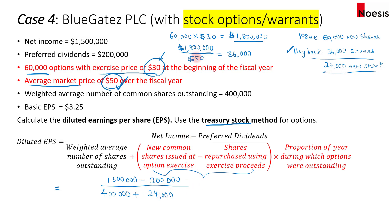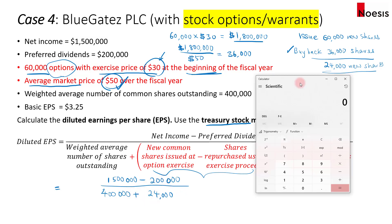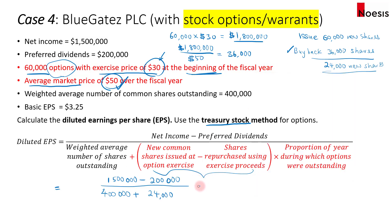Since the options were outstanding for the entire fiscal year, the proportion of year is 1, so we use the full 24,000. That gives us $1.3 million divided by 424,000 shares, which equals $3.07. Definitely, the diluted EPS is lower than the basic EPS because nothing is added back in the numerator — we only add to the denominator. So the stock options are dilutive.